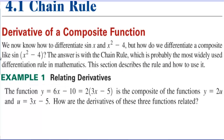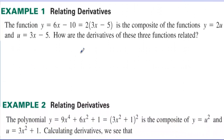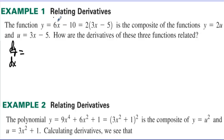Example 1: Relating derivatives. The function y equals 6x minus 10, which equals 2 times 3x minus 5, is a composite of y equals 2u and u equals 3x minus 5. To find the derivative of y with respect to x, you take the derivative of y with respect to u and then multiply that times the derivative of u with respect to x.